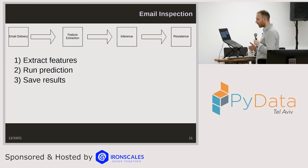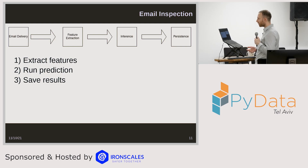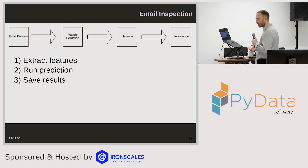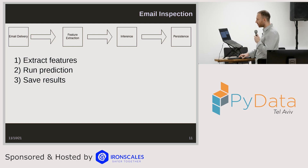Basically, we have a pipeline that goes through and inspects every email we receive in real time. There are three steps: one, extract features; two, run a prediction; three, save the results. And we can use those results to make new predictions in the future.